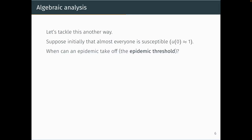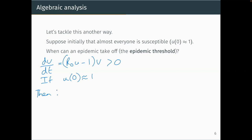Suppose initially that almost everyone is susceptible, so u(0) ≈ 1. When can an epidemic take off? We need dv/dt = (R₀u − 1)v > 0. With u ≈ 1, this becomes approximately (R₀ − 1)v > 0. Since v is very small but non-zero, dividing through by v gives R₀ − 1 > 0, meaning R₀ must be greater than one for an epidemic to occur.